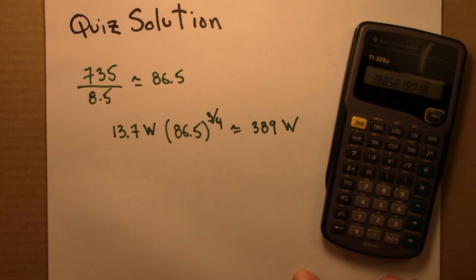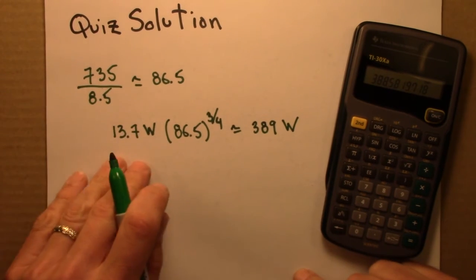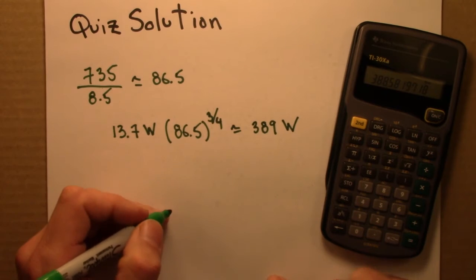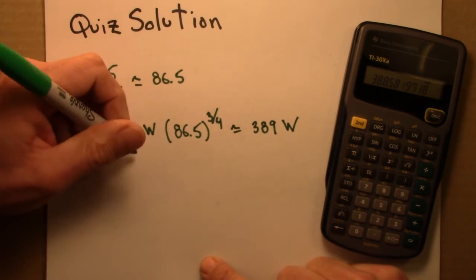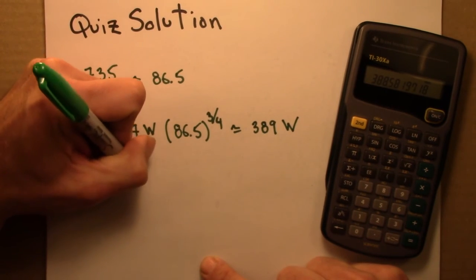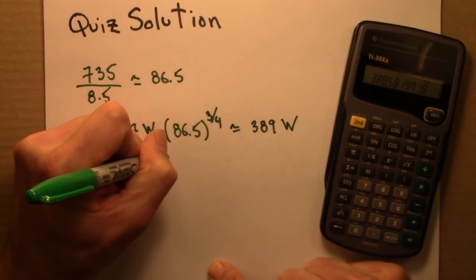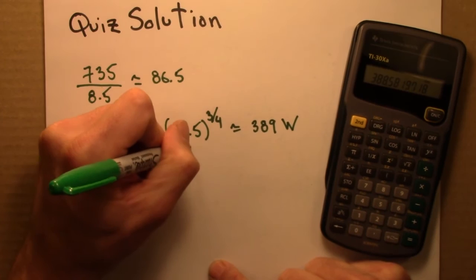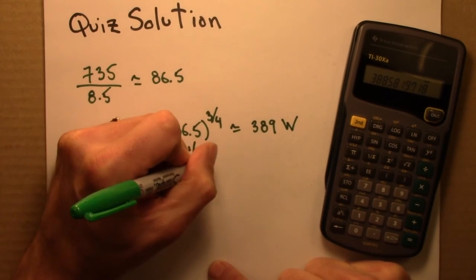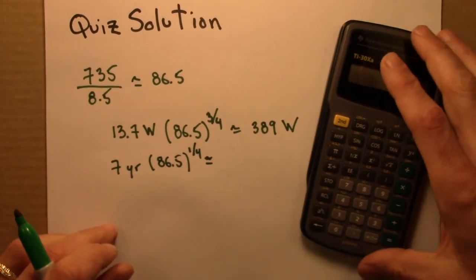Alright, next let's think about lifespan. So we've got 7 years for the foxes. Lifespan goes as mass to the quarter power. So let's evaluate that.